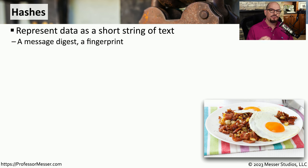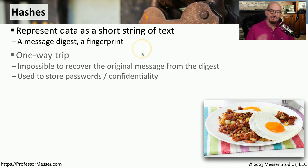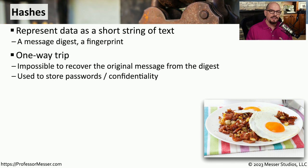A cryptographic hash is used to represent data as a short string of text. Sometimes you'll hear this referred to as a message digest or a fingerprint. Just like our fingerprints can represent us, a digital fingerprint can represent data that is being stored elsewhere. Keep in mind that this cryptographic hash is not encryption — you can't recreate the data if the only thing you have is the hash, for the same reason you can't recreate a person when all you have is their fingerprint.